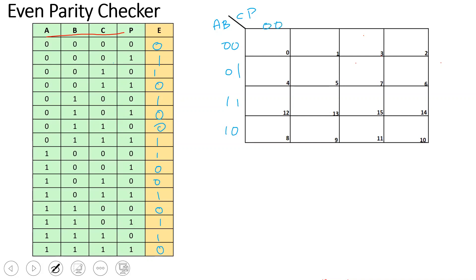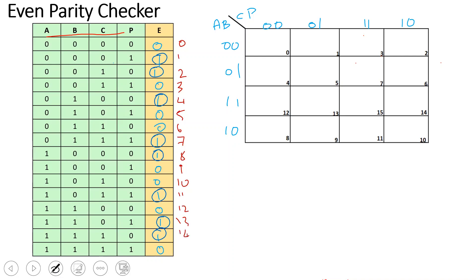For the K-map, my inputs are A, B, C, and P — these are 4 input variables, so we use a 4-variable K-map with 16 cells numbered 0 to 15. I fill in the values. The cells that have E equal to 1 are: cell numbers 1, 2, 4, 7, 8, 11, 13, and 14.